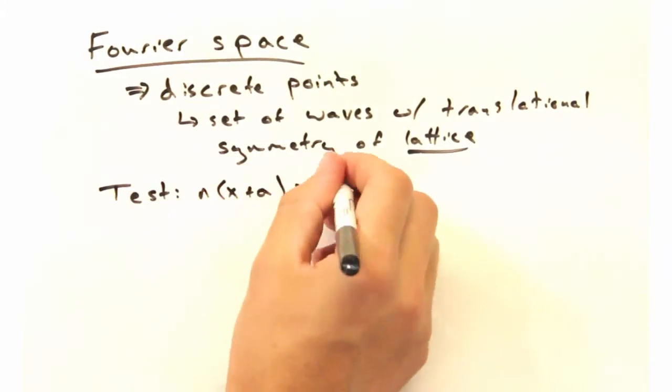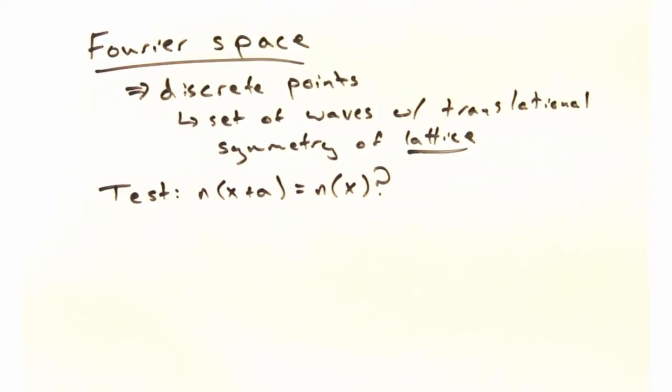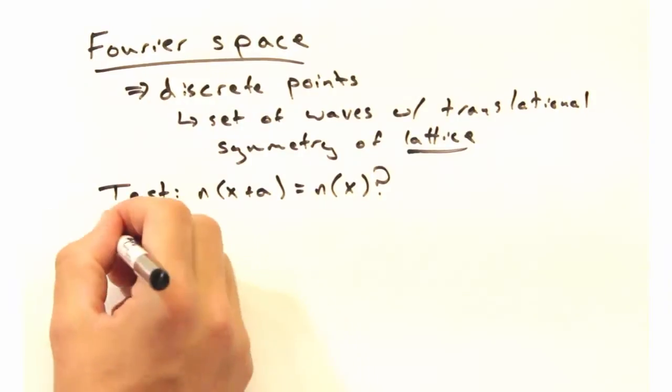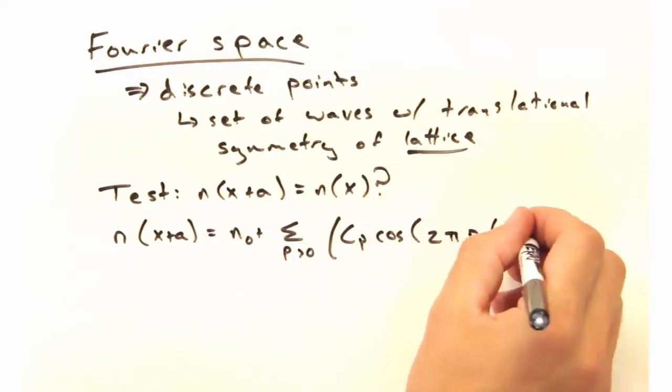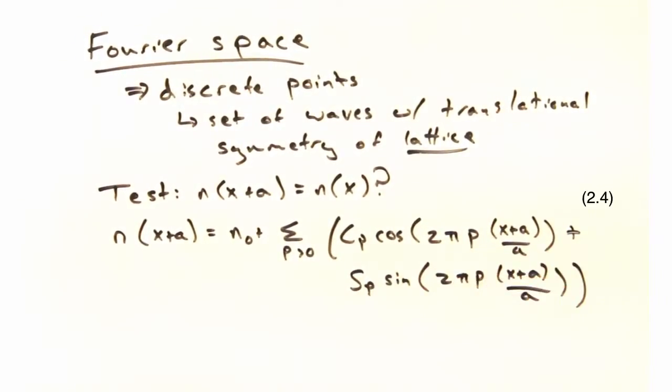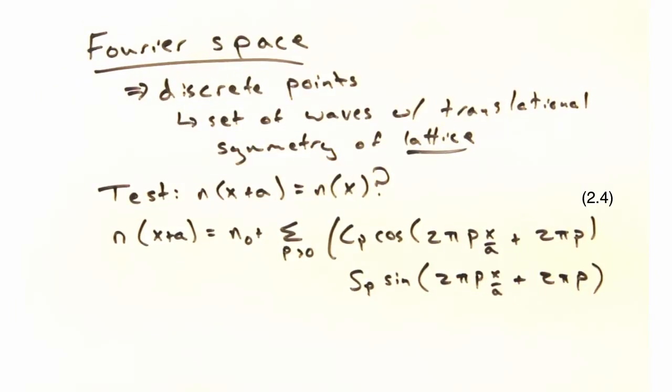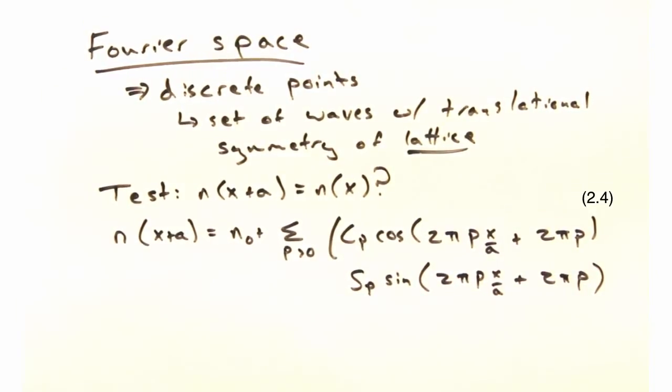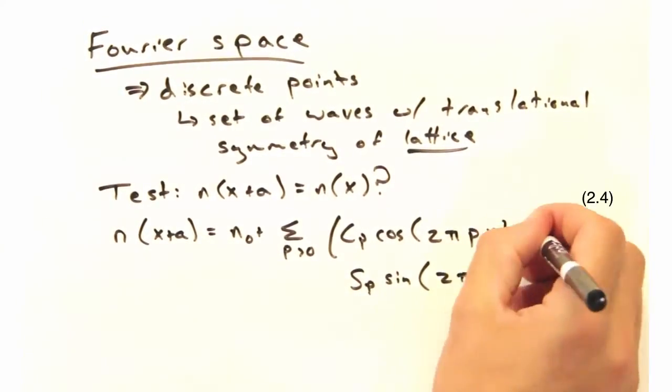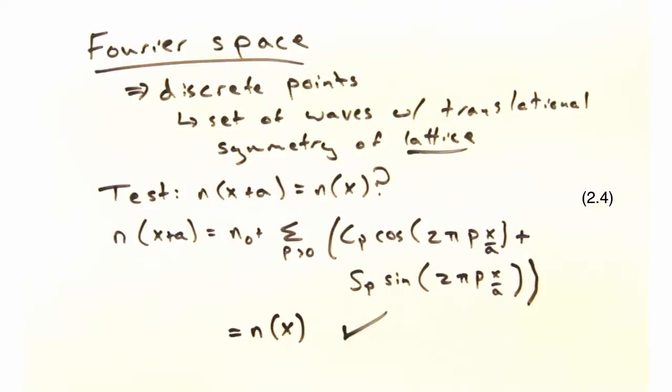So that's a big claim to make. How would you test that? Well that's easy. We just need to replace x with x plus a, and see if we get back our original N of x. Now using some trig trickery, we can go from this to a more simplified expression. Lo and behold, we get back N of x.